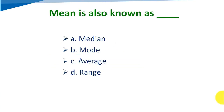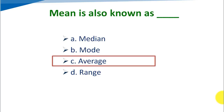Mean is also known as — Option A: median, Option B: mode, Option C: average, Option D: range. The correct answer is C, average, because mean is also known as average.